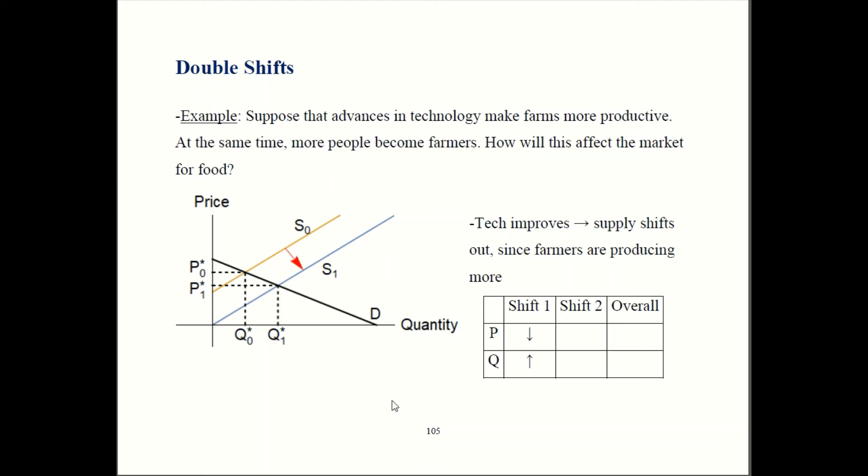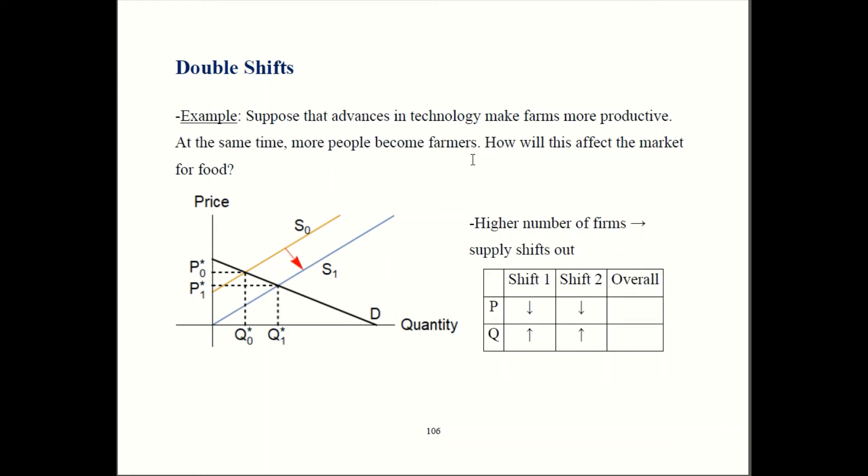Now, let's talk about the other part of the story. We said at the same time, more people become farmers. That expands the number of firms, so that's going to shift supply outwards.